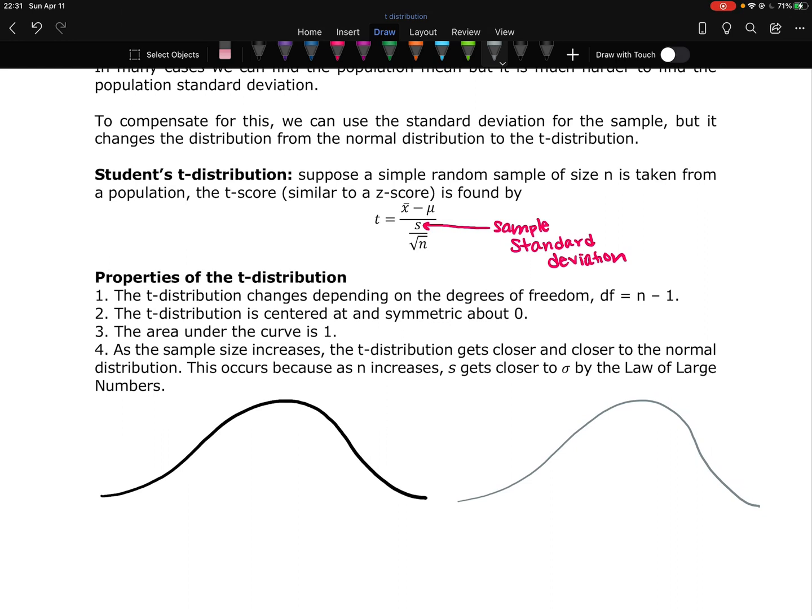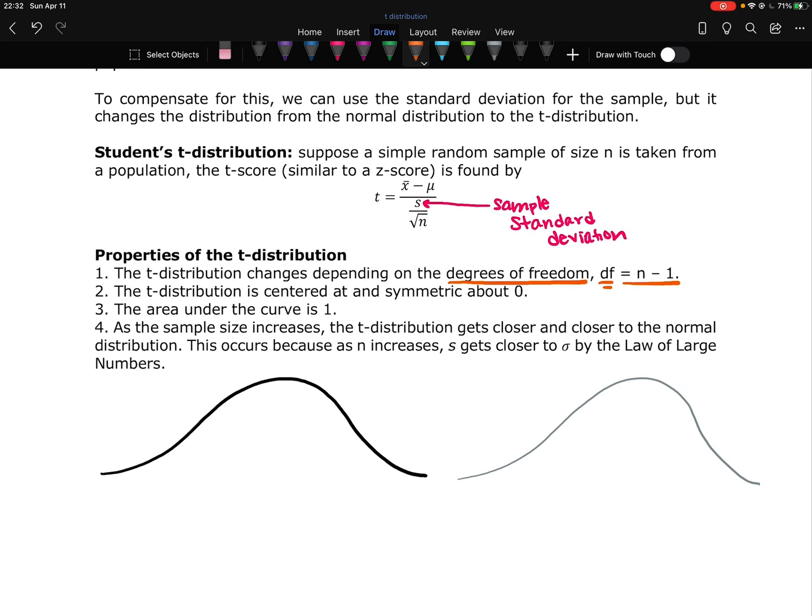But the t-distribution changes depending on the degrees of freedom. Degrees of freedom, shorthanded as df and calculated by taking your sample size minus one. Yes, there is a very good reason why it is a sample size minus one. No, I don't remember what it is. But if you are curious, I can look it up and we can talk about it during office hours. So the t-distribution will change slightly depending on your degrees of freedom. It will always be bell shaped, but the spread of that bell shape will change depending on how large your sample is.